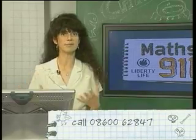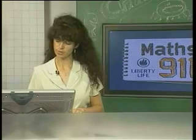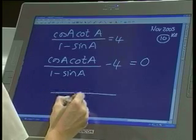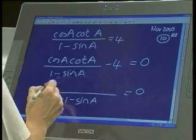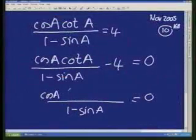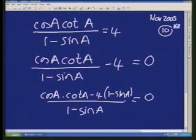So that's what we're going to do. We're going to simply simplify as far as we can go. We've got two fractions, so we want to find the common denominator. We get 1 minus sine a, and we're left with this cos a times the cot a minus the 4 into 1 minus sine a. So far we've just added up the fractions.